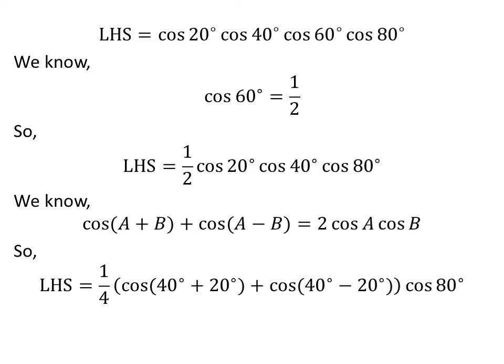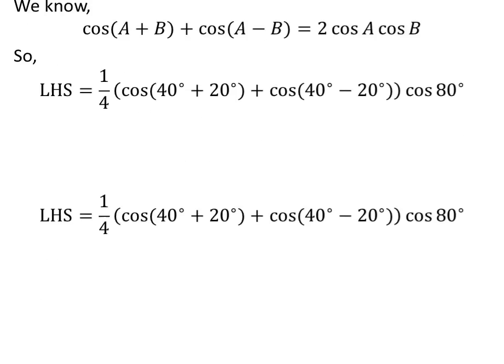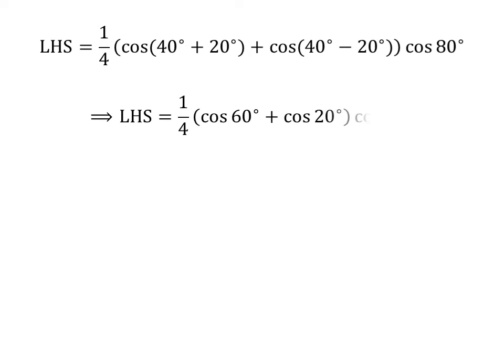Applying the above identity to cosine of 20 degrees times cosine of 40 degrees gives us: left hand side equals 1 upon 4 times cosine of (40 degrees plus 20 degrees) plus cosine of (40 degrees minus 20 degrees), times cosine of 80 degrees. Further simplification gives us left hand side equals 1 upon 4 times cosine of 60 degrees plus cosine of 20 degrees, times cosine of 80 degrees.